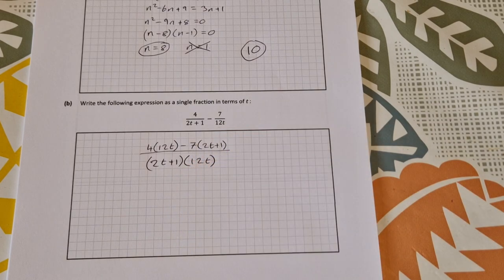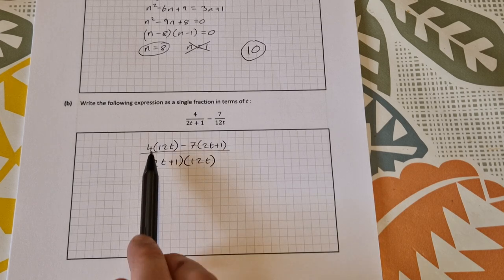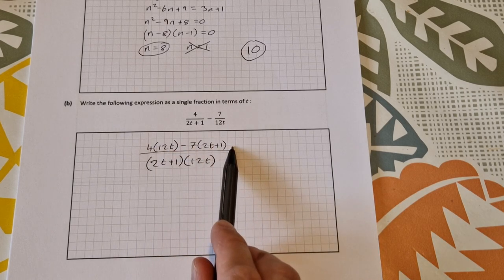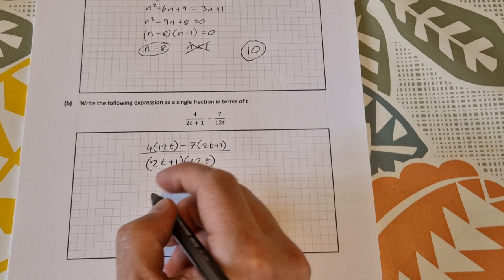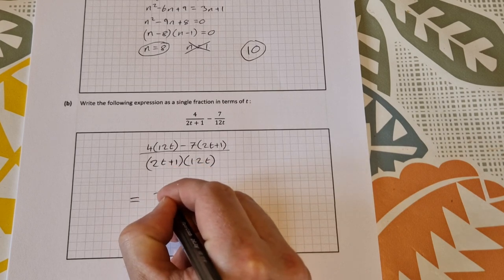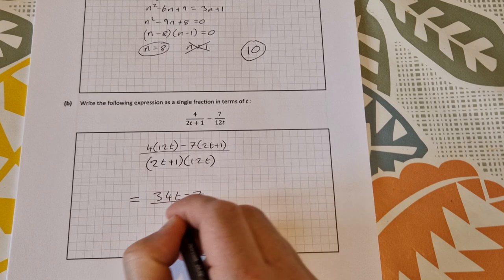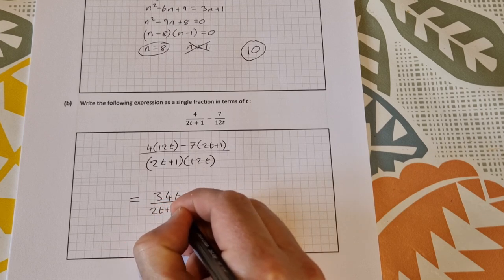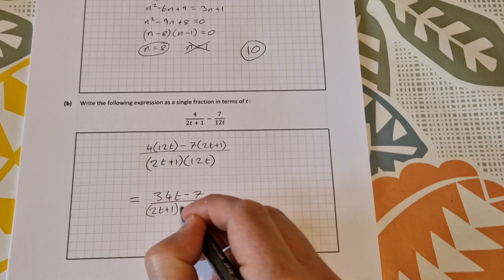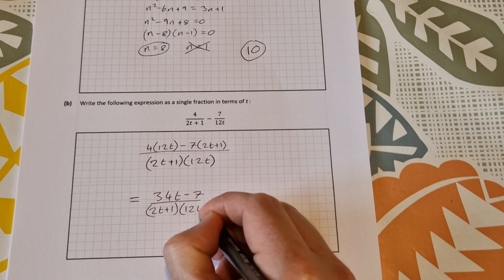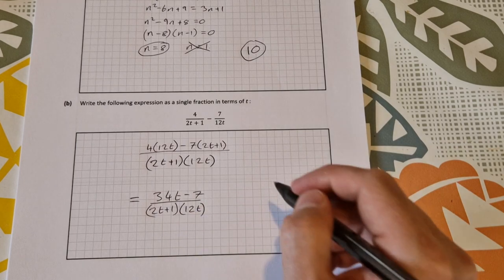And to simplify these fractions in the leaving cert you simplify the top but you do not do anything to the bottom so your answer is going to be 34t minus 7 over 2t plus 1 times 12t and again that is worth 10 marks.